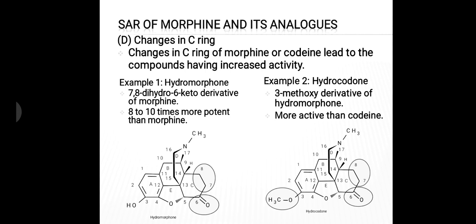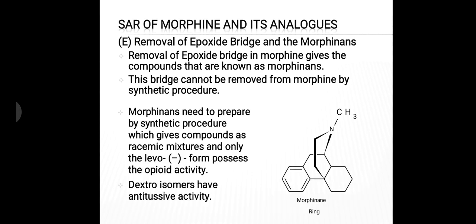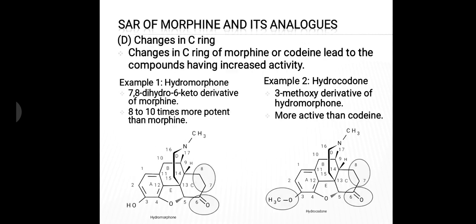The next category is changes in ring C. Changes in the C ring of morphine lead to compounds having increased activity. The first example is hydromorphone. Hydromorphone is the 7,8-dihydro-6-keto derivative of morphine — we remove the double bond at 7,8 and replace the hydroxyl group with a ketone at the sixth position. Hydromorphone is 8 to 10 times more potent than morphine.